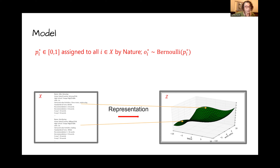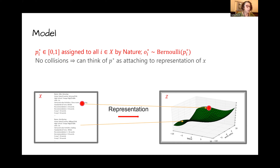My model is that there is nature. Nature assigns a probability of a positive outcome — we're looking at just the Boolean case today. Nature assigns to each individual i a probability P_i* of a positive outcome, where the star indicates it comes from nature. The actual outcome is drawn from a Bernoulli distribution with probability P_i* of being one. Since we're assuming no collisions, we can think of P* as also attaching to the representation Z. The probability comes with the person as they are mapped; there's no collision, so we don't need to average anything.